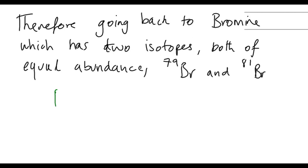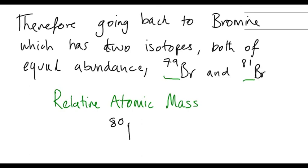The relative atomic mass is equal to an average of seventy-nine and eighty-one. Therefore, the relative atomic mass you'll find in your periodic table is eighty Br.